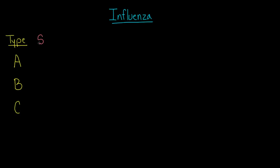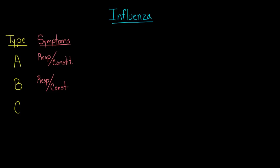The first thing I want to talk about are the symptoms. If you actually get these types of influenza, what symptoms would you expect? For type A, you expect the classic flu symptoms: some respiratory symptom like a cough, and also some constitutional symptom — something like a fever, malaise, or body ache. For type B, it's actually pretty much the same. Sometimes people say type B is a little more mild than type A, but generally speaking it's very hard to know whether you have type A or type B flu.